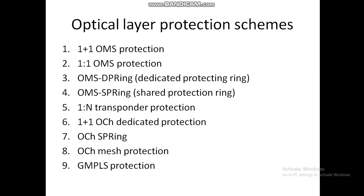The next scheme is 1:1 OCH — Optical Channel Dedicated Protection — where two light paths on disjoint routes are set up for each client connection. After that is OCH Sparing, which operates at the optical channel layer rather than the optical multiplex section layer. Then OCH Mesh Protection, and finally GMPLS Protection, which supports span and path protection.